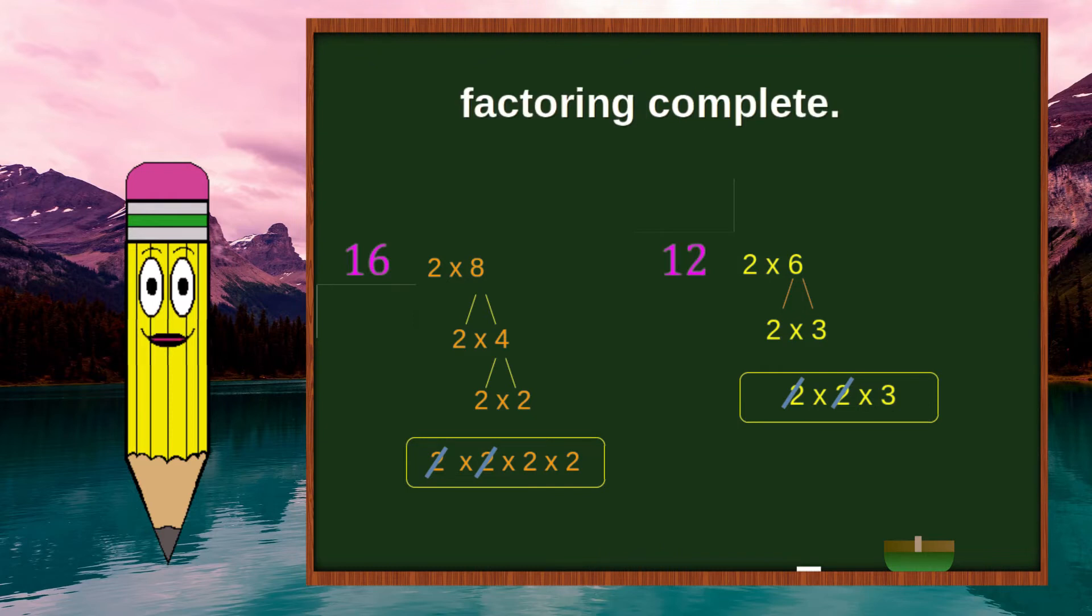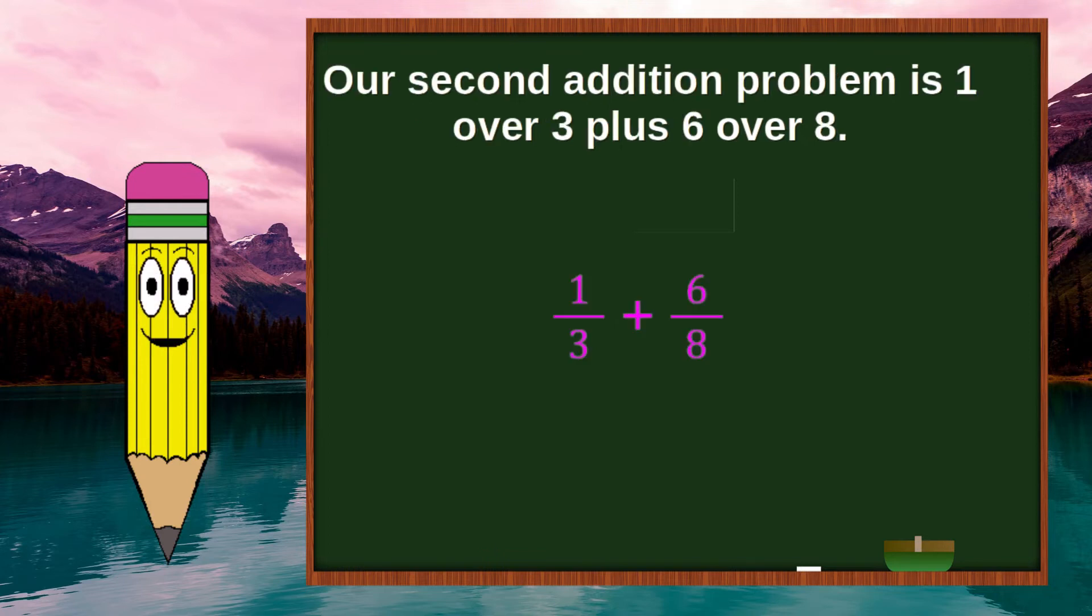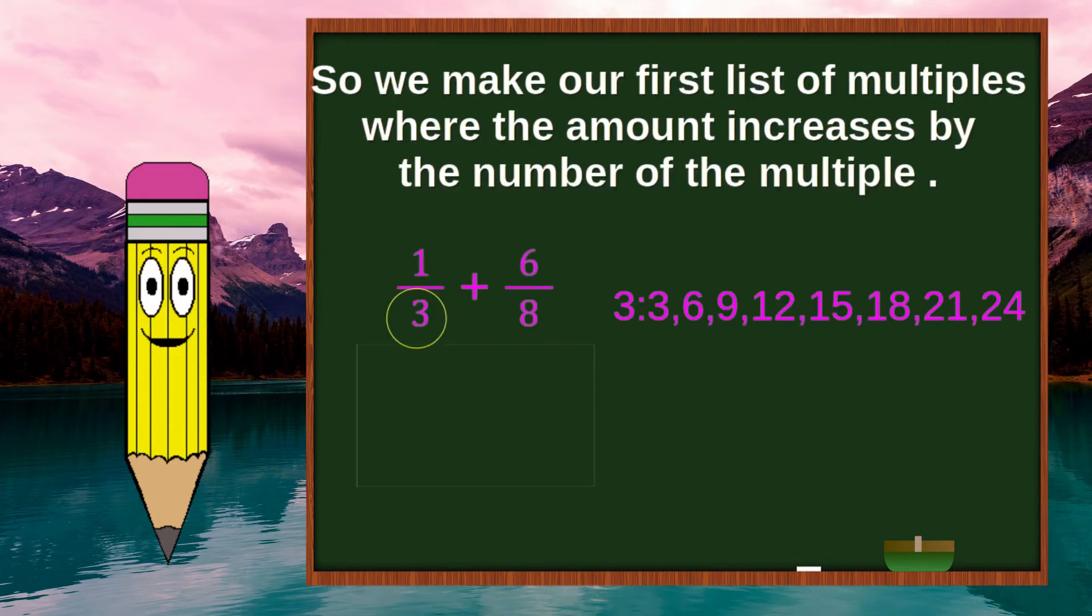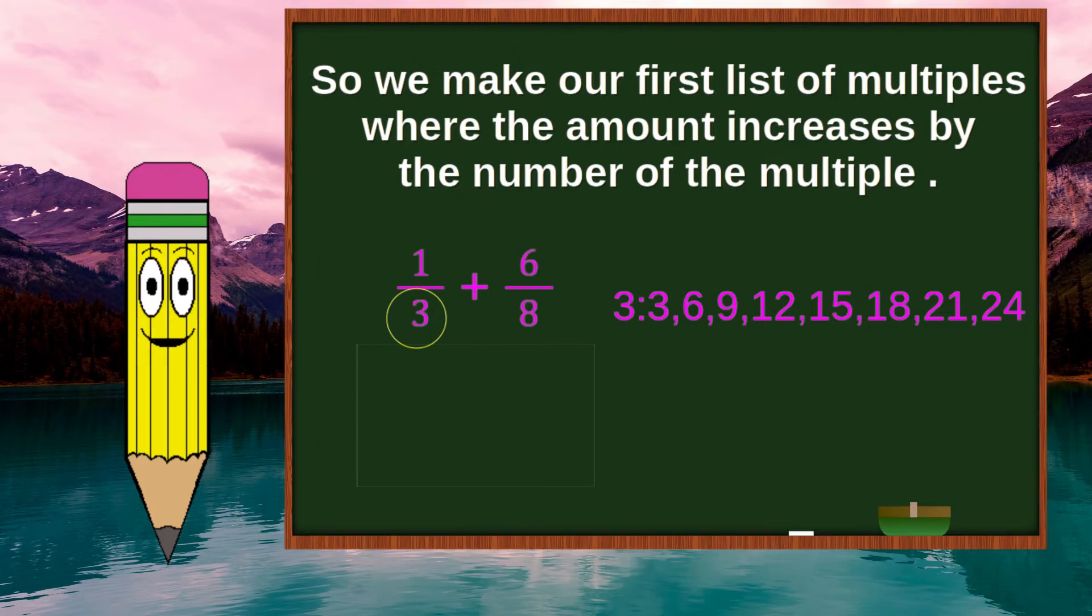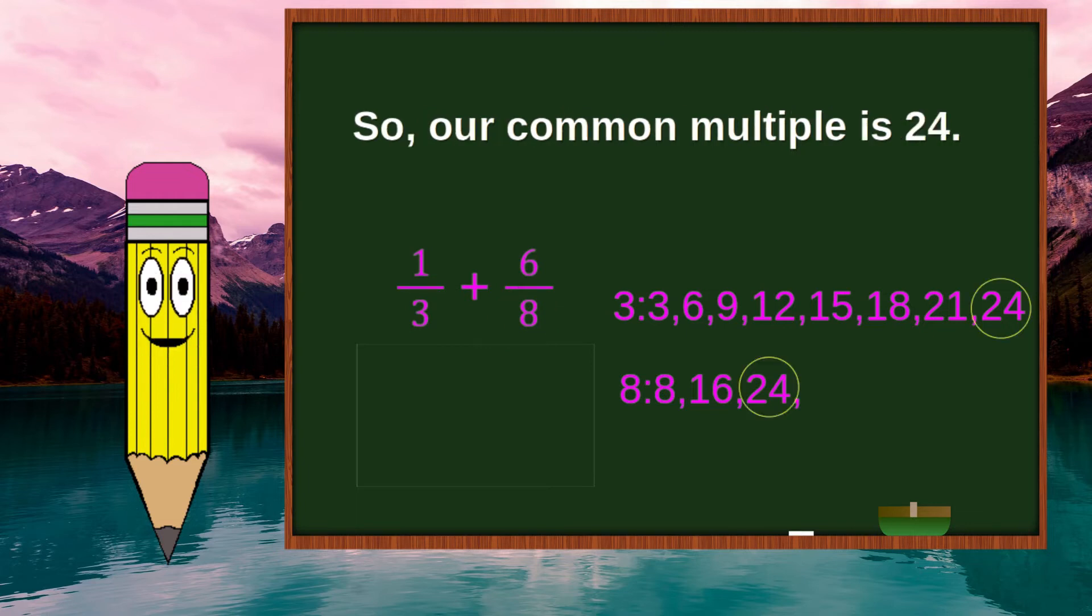Factoring now complete. Final answer is 4 over 3. Our second addition problem is 1 over 3 plus 6 over 8. So we make our first list of multiples where the amount increases by the number of the multiple. Second list of multiples. So our common multiple is 24.